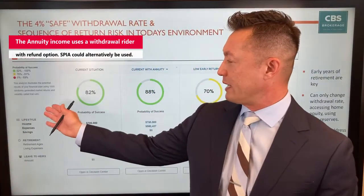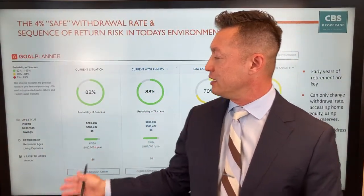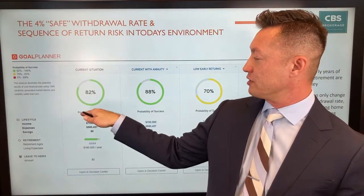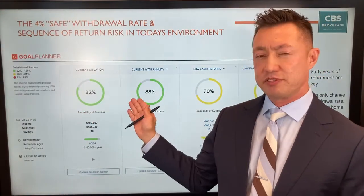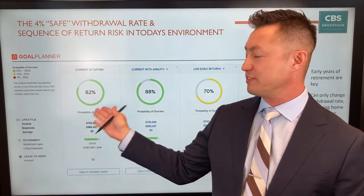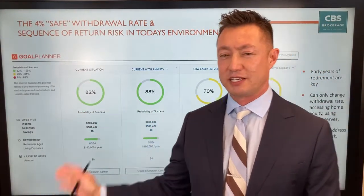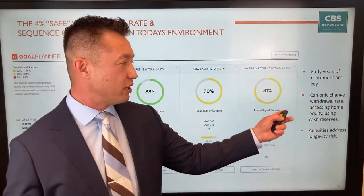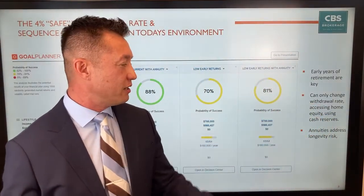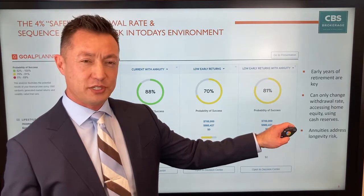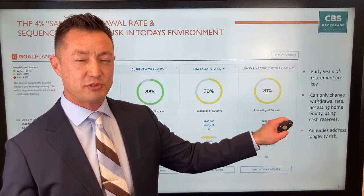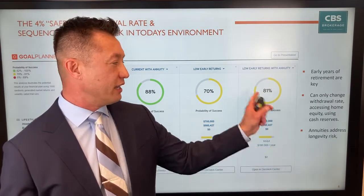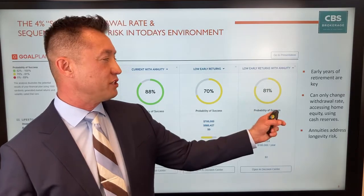Going back to eMoney and plugging the numbers in, under the current scenario we improved the probability of success by 6%, and again 11% under the low-return scenario — where in retirement the first two years are under 0% return with a 2% inflation rate — comparing results with and without the annuity.